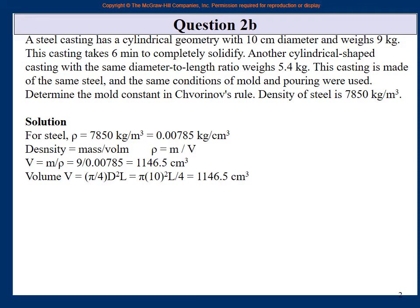For a cylinder, volume = (π/4) × d² × l. With d = 10 cm and the volume now known, we can solve for the length l. The length of the first casting comes out to 14.6 cm.